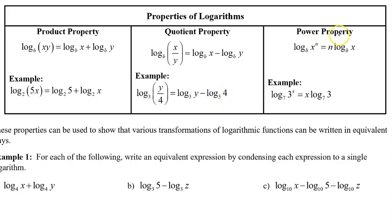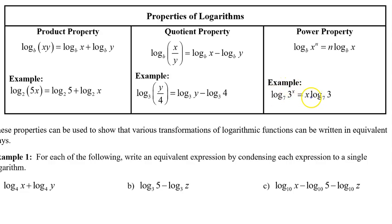And finally, there is the power property. The log base b of x to the n power could be written with that n out in the front. So for example, if we have the log base 7 of 3 to the x power, we could put that x out in the front and we get x times the log base 7 of 3.